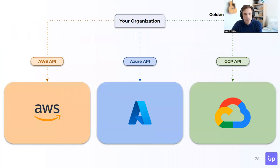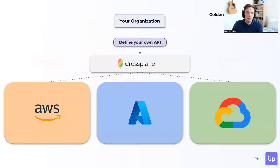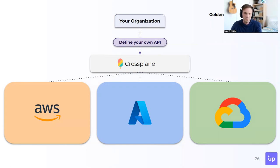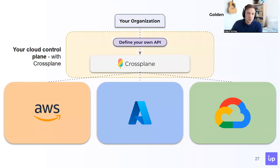Going back to how your organization builds on different clouds — this is the picture I presented. How this changes with Crossplane is that it allows you to build your own API, a single platform that covers any cloud provider or cloud service you want, all under one roof. You get to tailor this API to your business needs. That is your cloud control plane with Crossplane — and with that, the golden age meter goes to 100%.